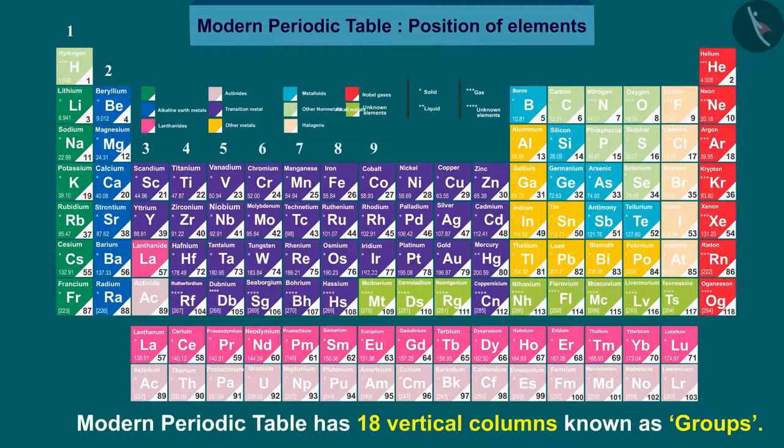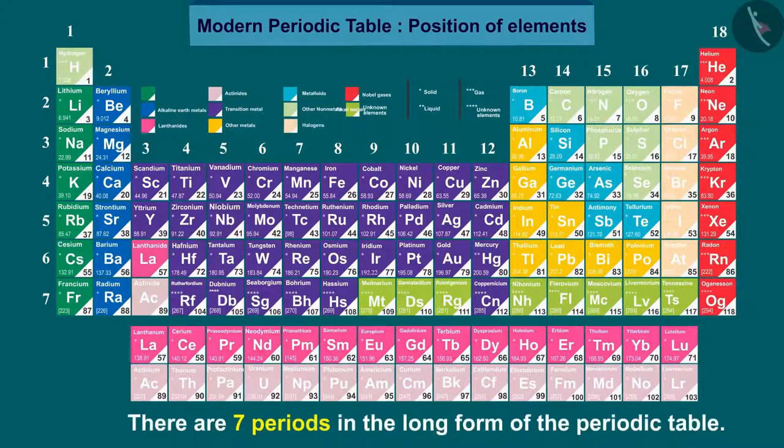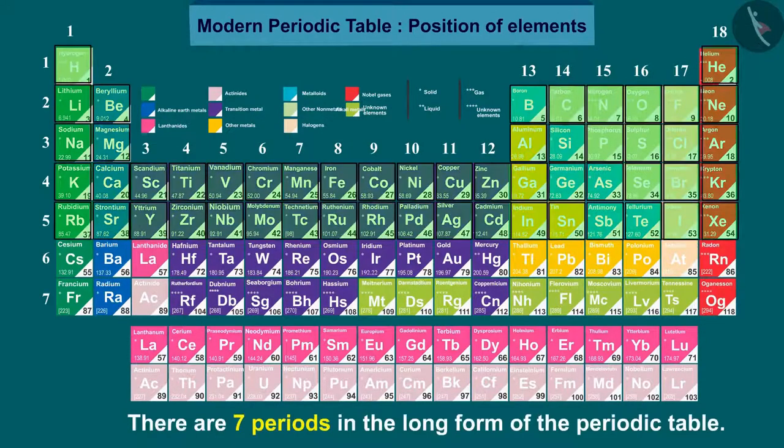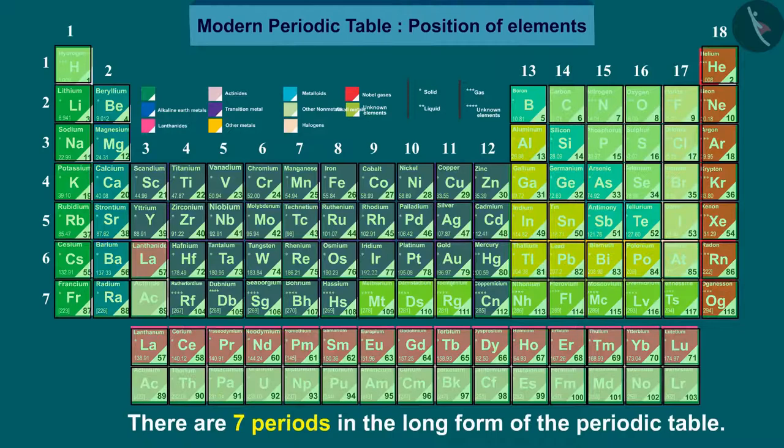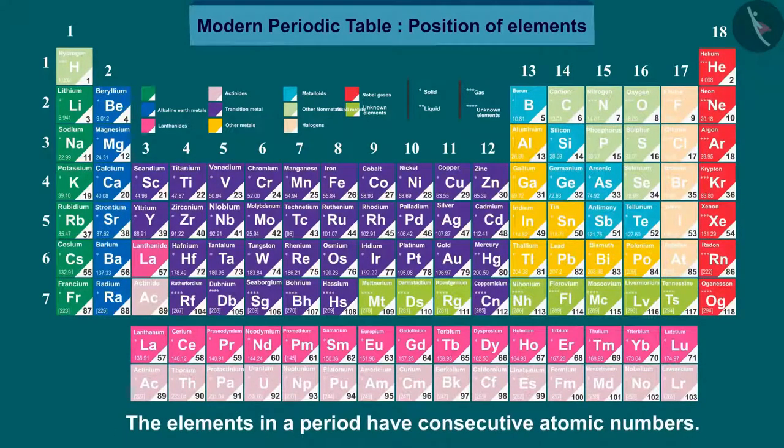The modern periodic table has 18 vertical columns known as groups and seven horizontal rows known as periods. There are seven periods in the long form of the periodic table. The elements in a period have consecutive atomic numbers.